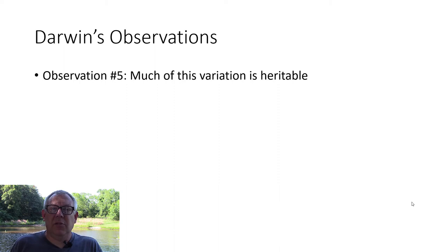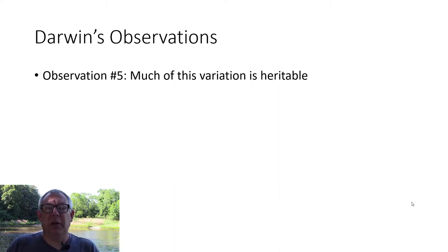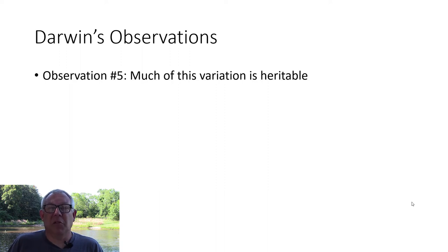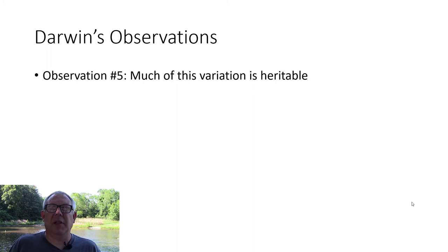Darwin also said much of this variation is heritable — that traits which vary among individuals get passed on to their offspring. It's not random who gets what trait; you get your traits from your parents. This goes back to the idea of artificial selection and breeding: you realize that traits get passed on to offspring.